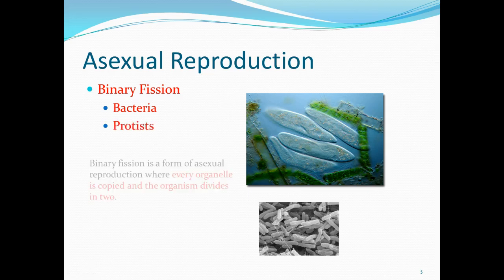Binary fission is almost the same process, but it occurs in bacteria, algae, and protists — other types of unicellular organisms. These are different from mitosis simply because they don't have a nucleus; they are prokaryotic cells, so you can't have the regular stage of the spindle forming around the nucleus. But these organisms divide basically in the same way: the DNA replicates, the organelles are copied, and then the organism splits in two.